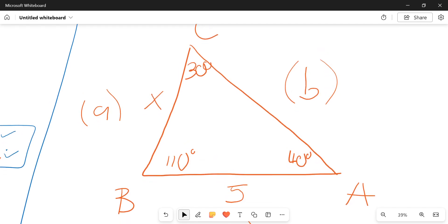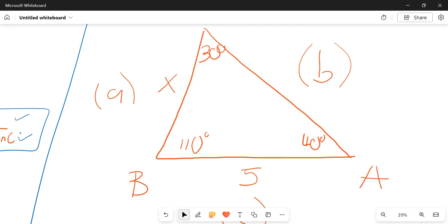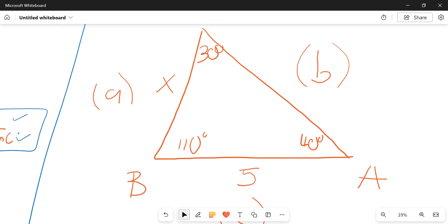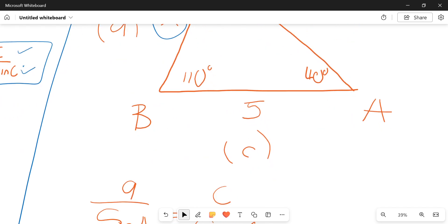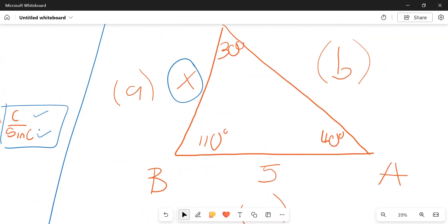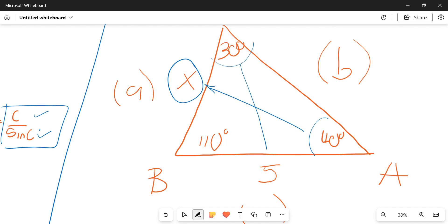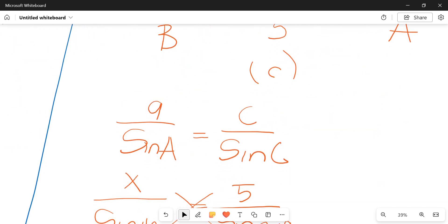So you'd see that we have A, B, C. Then we have the length of C as five meters. The length of B is not given. The length of A is given as X, which is the variable that we are trying to solve for. So already, this suggests to you that we need to use the A over sine A and the other unknown we have would be our C over sine C.